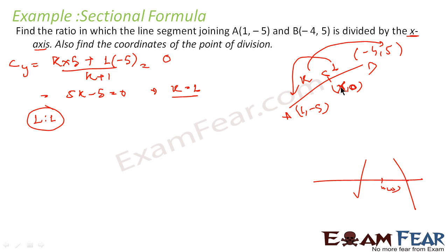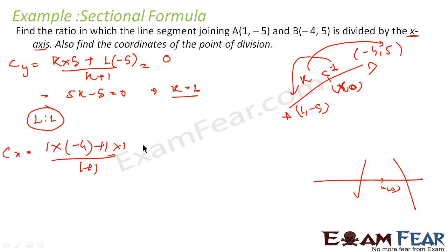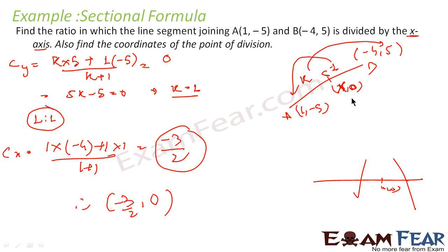Since the ratio is 1 is to 1, we can find the value of x. C's x-coordinate: 1 into (-4) plus 1 into 1, divided by 1 plus 1. This becomes (-4 + 1) / 2, that is -3/2. So x = -3/2. Therefore the point is (-3/2, 0). Since 0 was given we found the ratio 1 is to 1, and since we have the ratio we found the value of x.